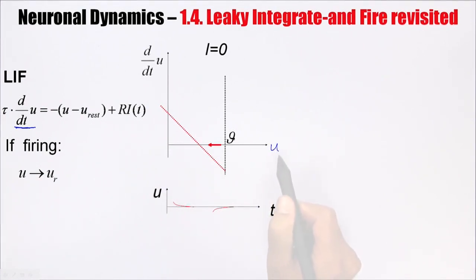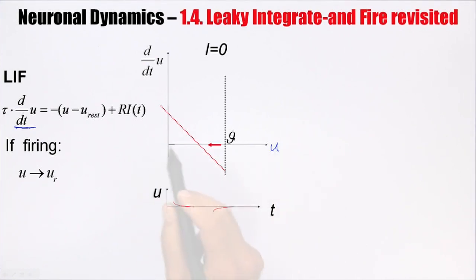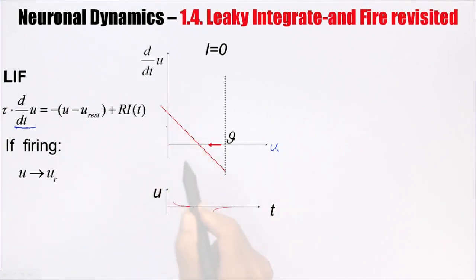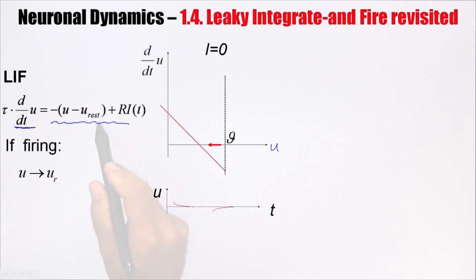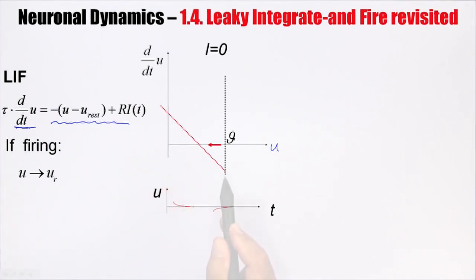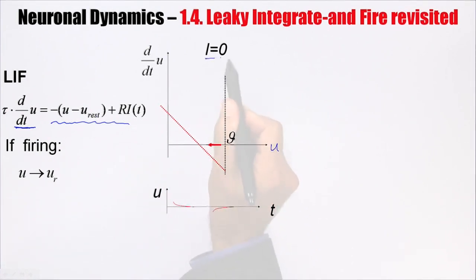In order to know what the derivative d/dt u is as a function of the voltage, I just have to evaluate the right-hand side of the equation. u minus u_rest is a linear function, so this gives a linear line. Suppose for the moment that the current is zero.